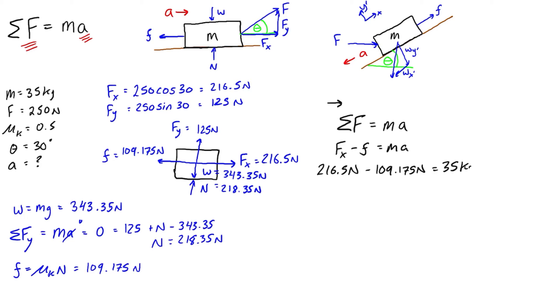We can just do that subtraction, so we have 107.325 newtons. Divide both sides by 35 kilograms, and that leaves us with a. And if you just do that division, we find that acceleration is 3.07 meters per second squared to the right.